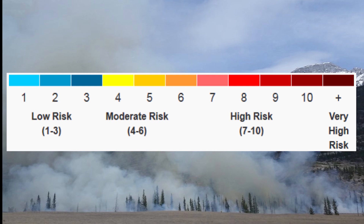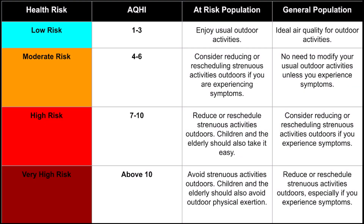The Air Quality Health Index communicates four things: the air quality in relation to your health on a scale from 1 to 10; a category that describes the level of health risk associated with the index reading; health messages customized to each category for both the general population and the at-risk population; and current hourly air quality health index readings and maximum forecast values for today, tonight, tomorrow, and the next day.